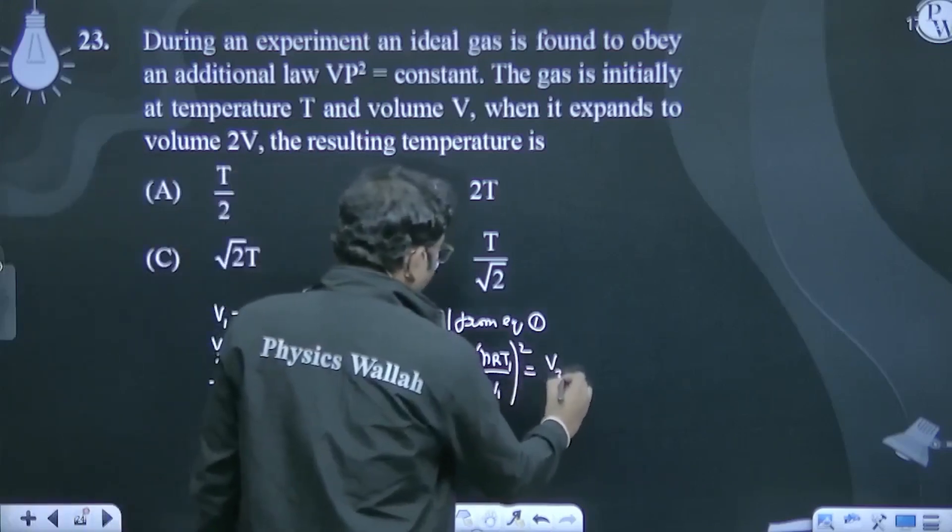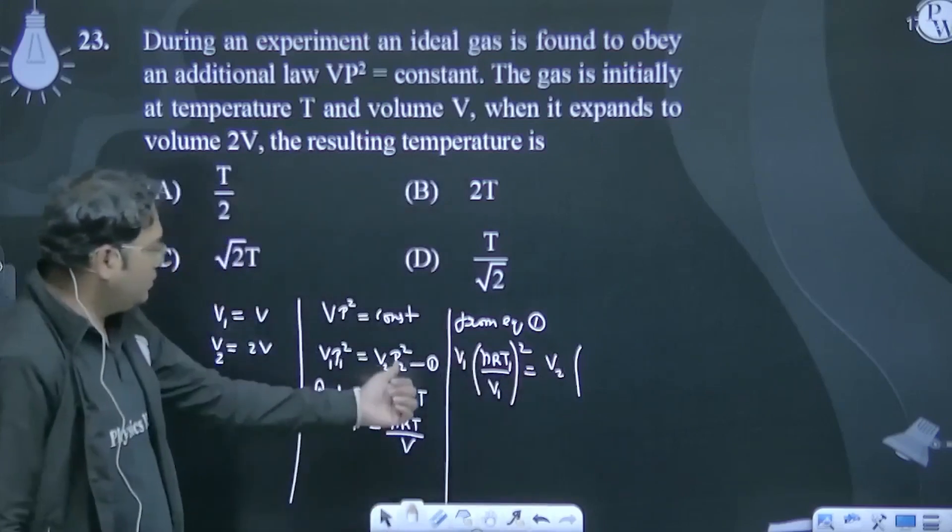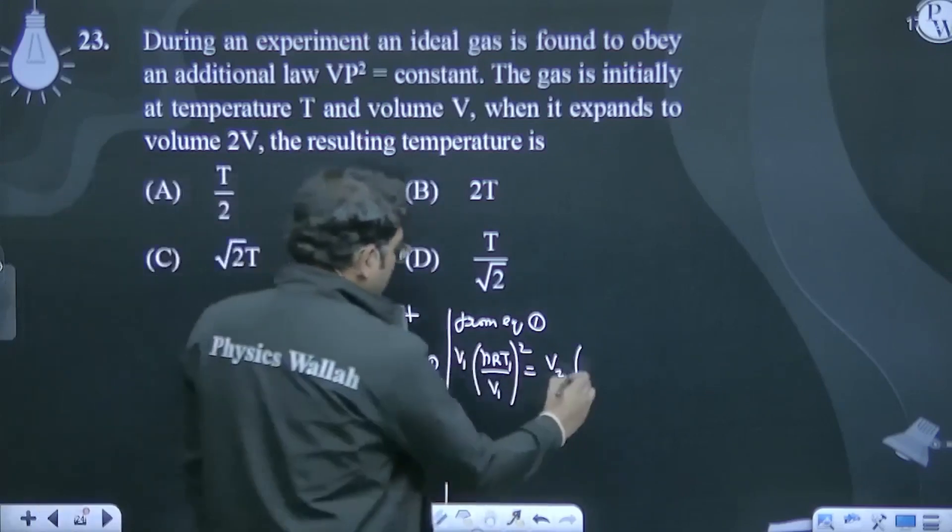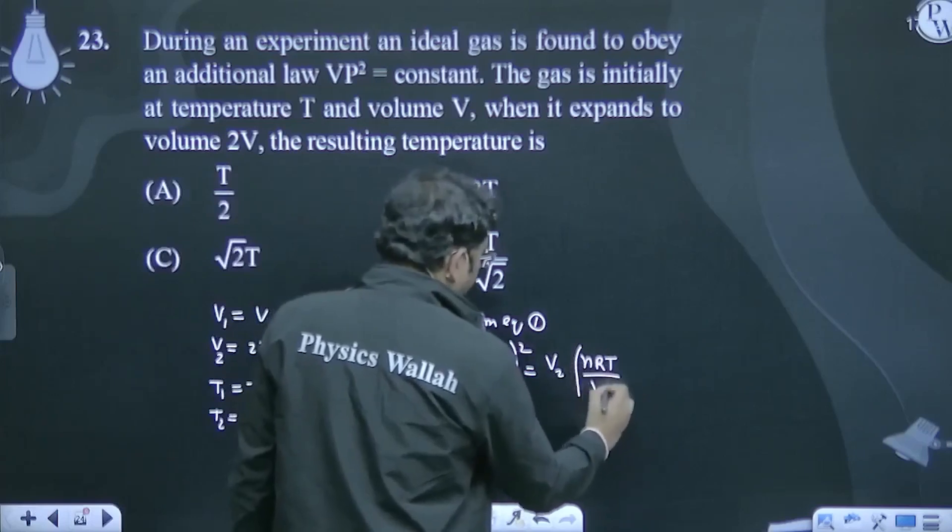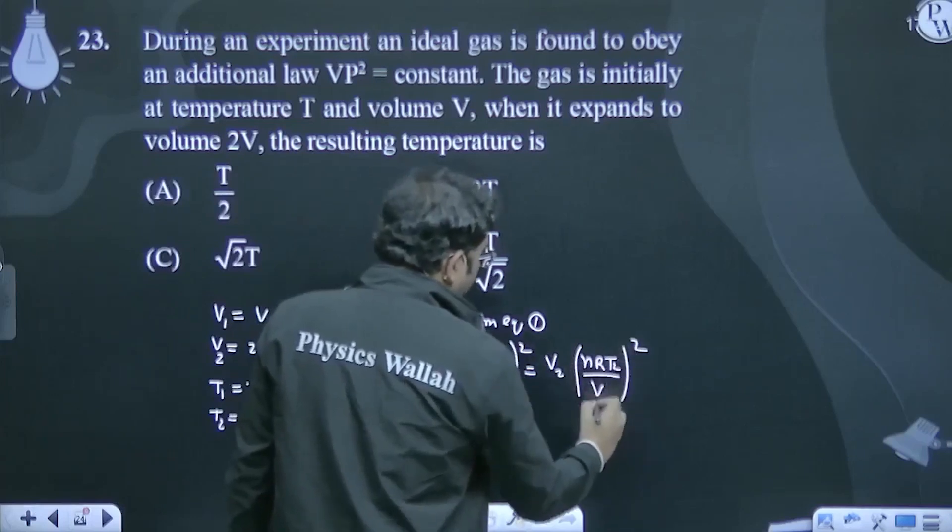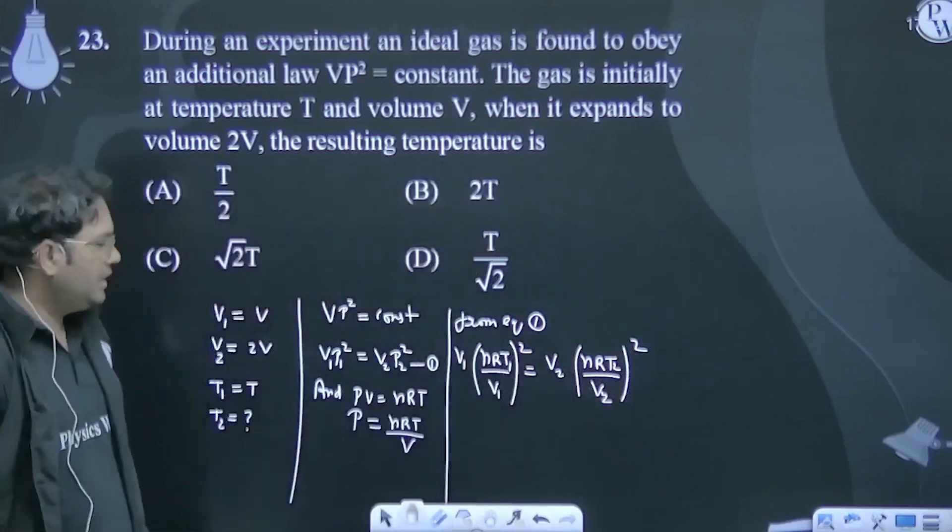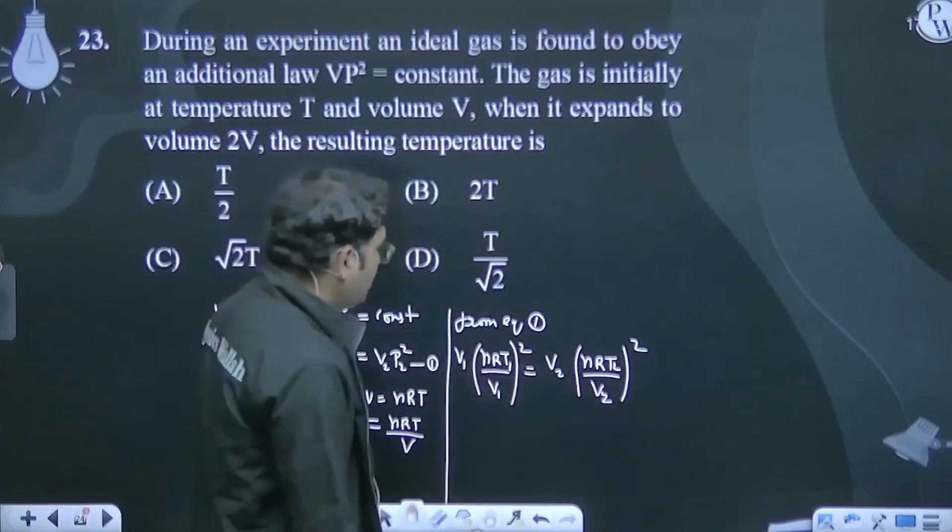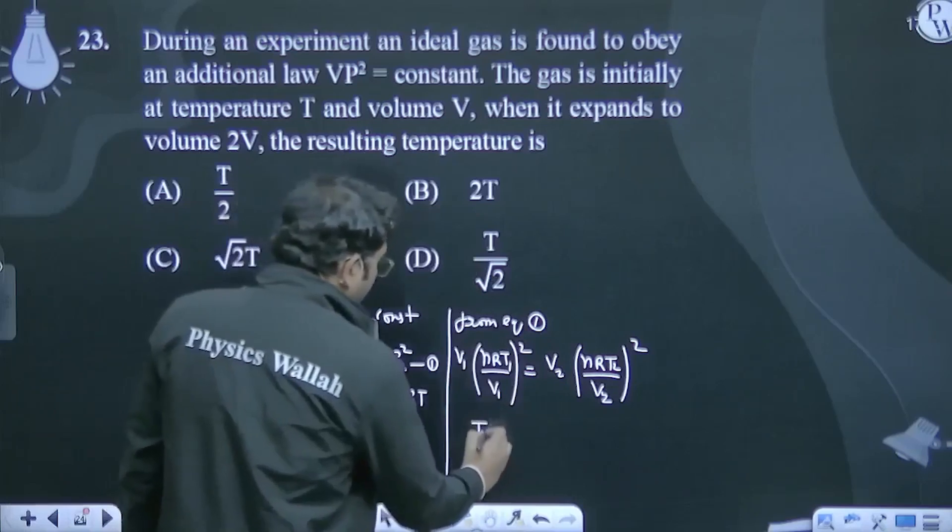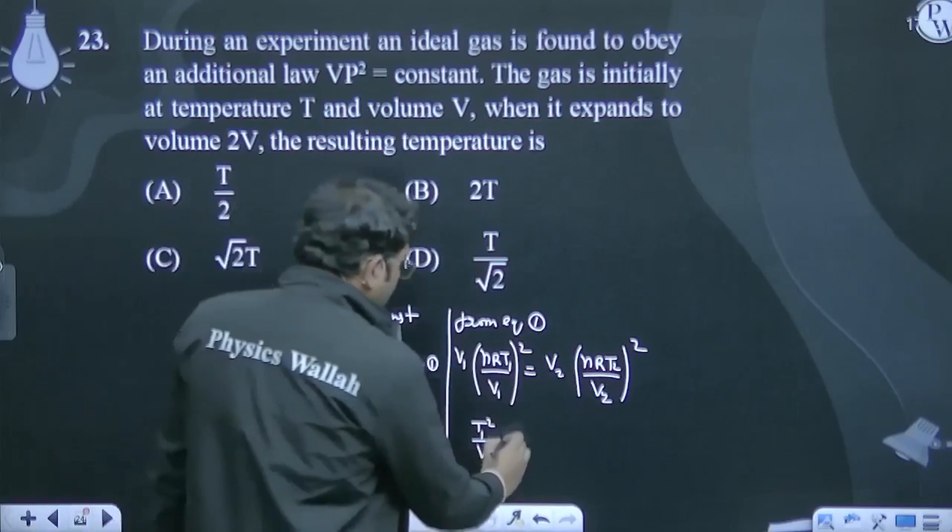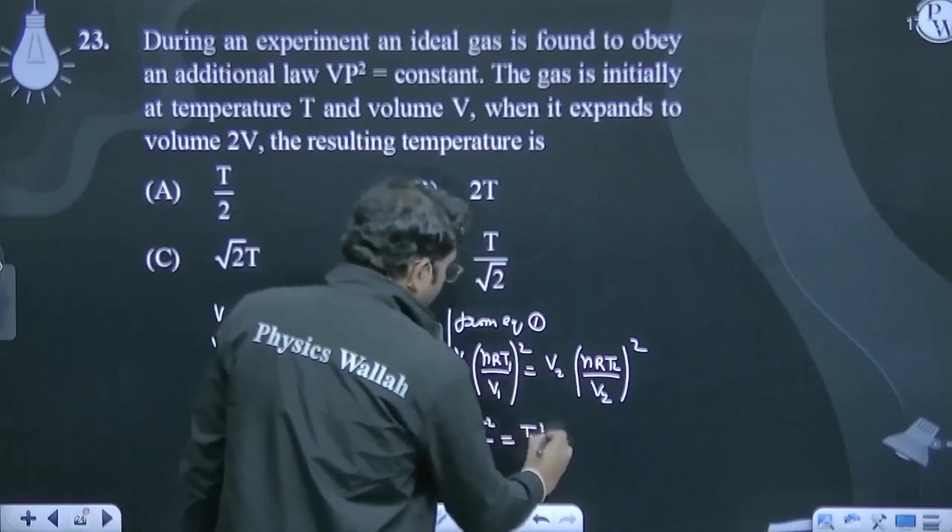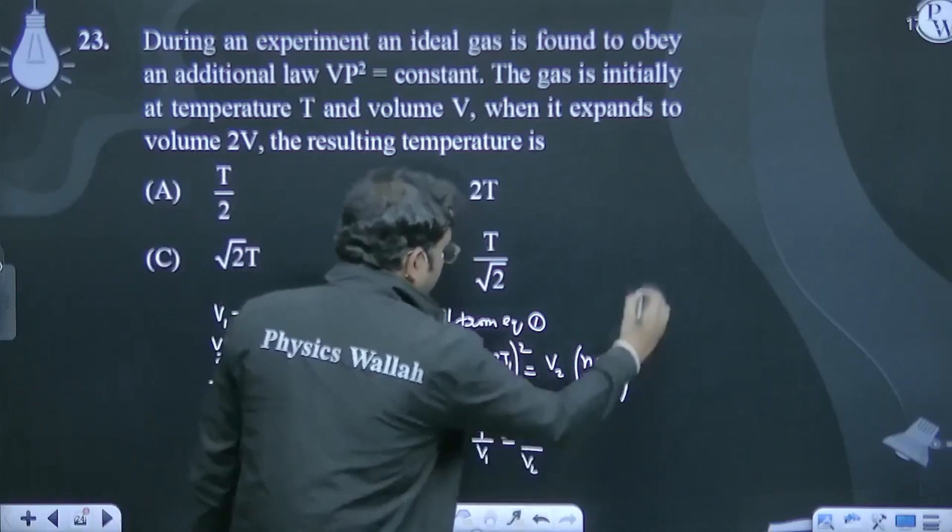This becomes VP² into P, and P equals nRT divided by VP². So T₁ over V₁ equals T₂ over V₂.